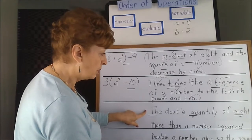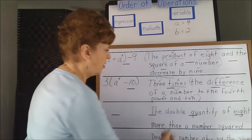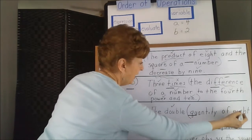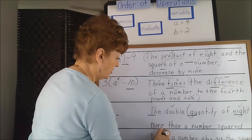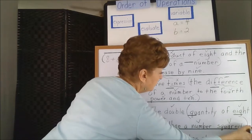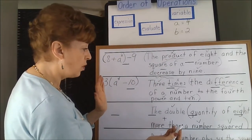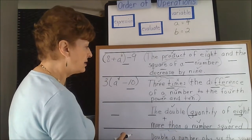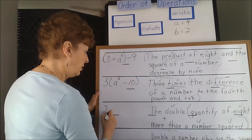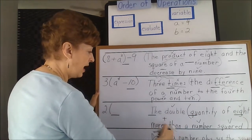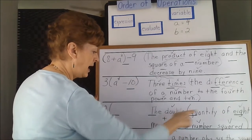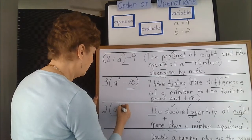The double quantity of 8 more than a number squared. Here we have a quantity — the doubled quantity, that's a number. So we're going to have to double this, which is another way of saying 2 times. So, 2 times the quantity of 8 more than — the 8 is actually hooked on to the number squared. See how we have to turn that around? It's 8 more than, so we have a number squared, and then we have 8 more than that.